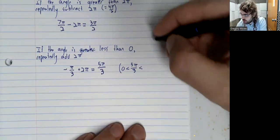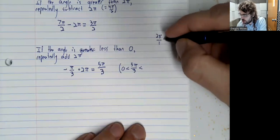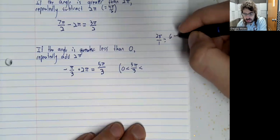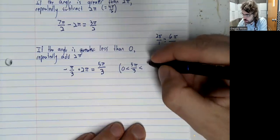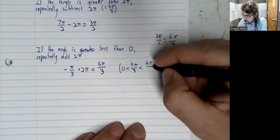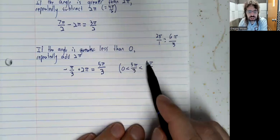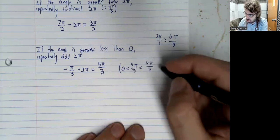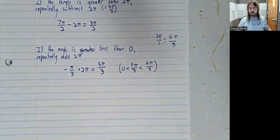2 pi over 1 is 6 pi over 3. And certainly 5 is less than 6.